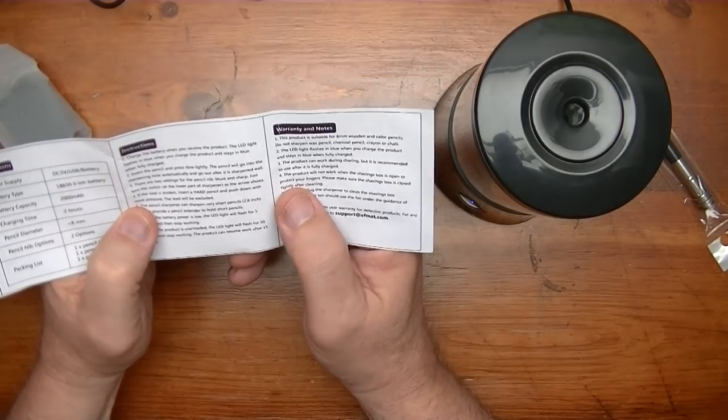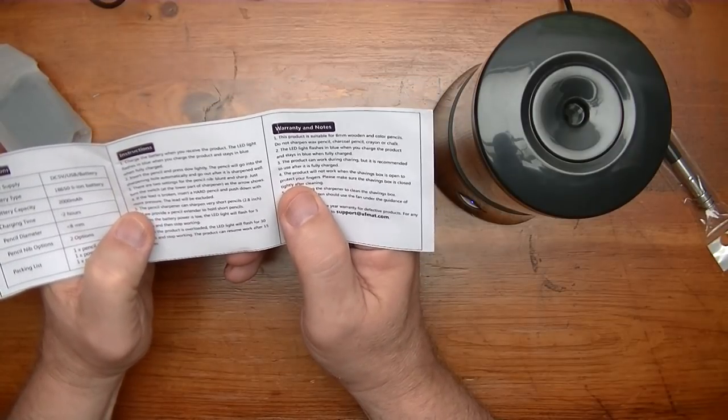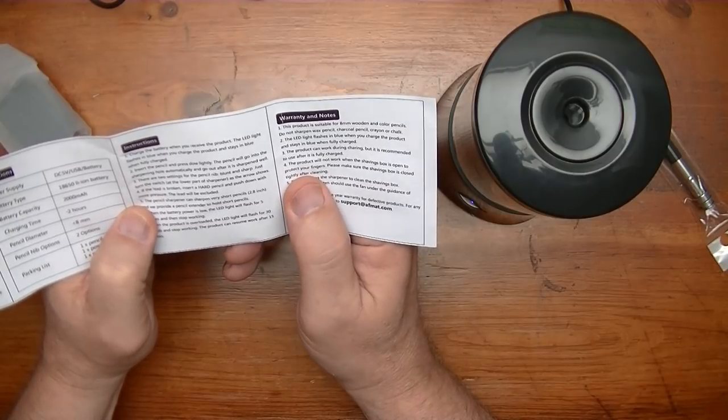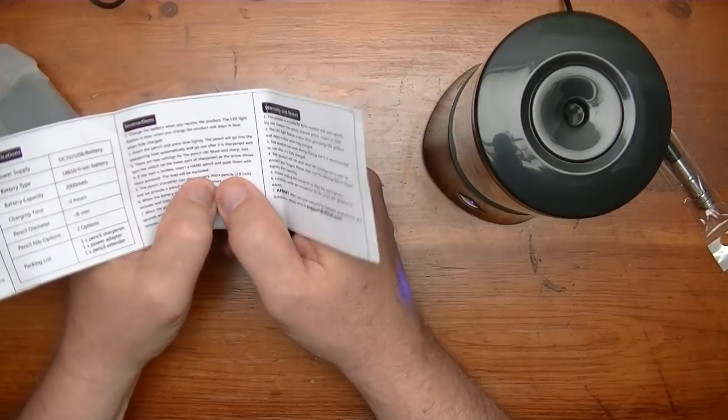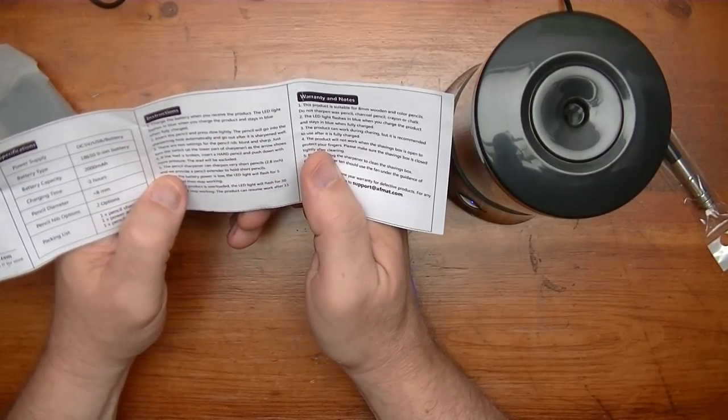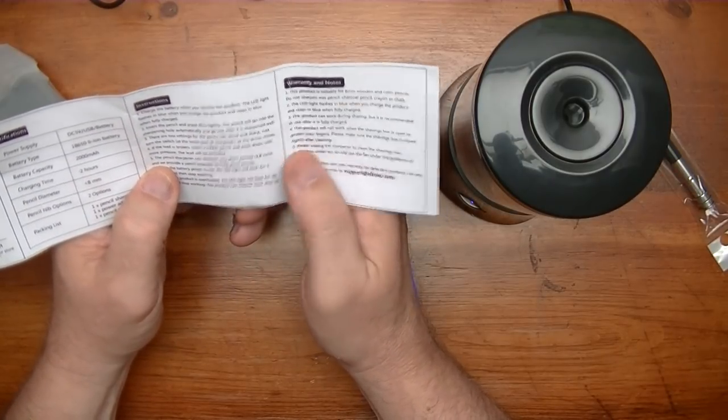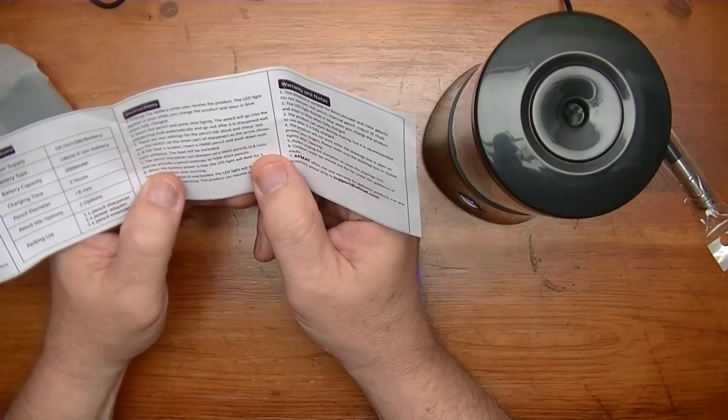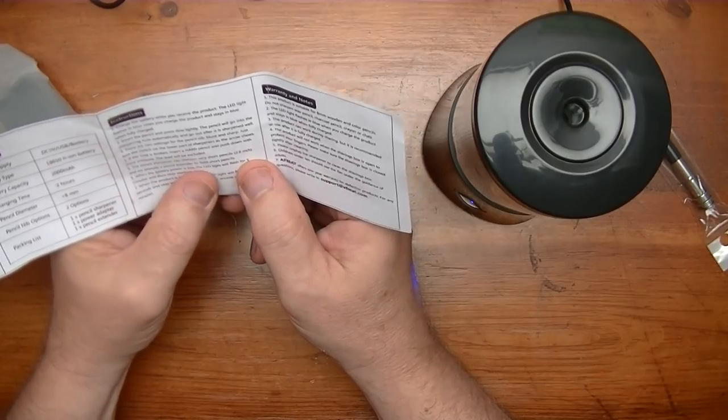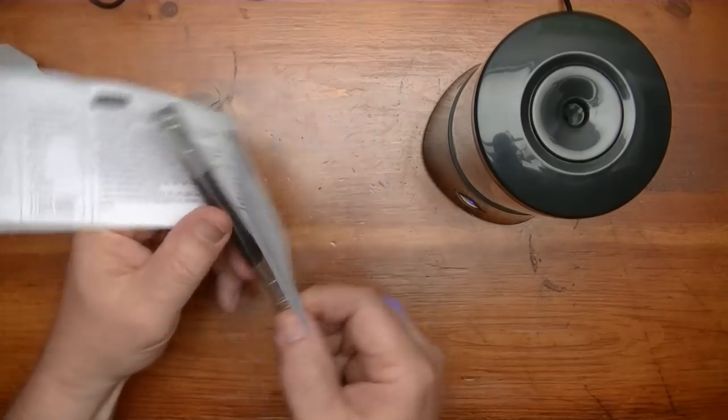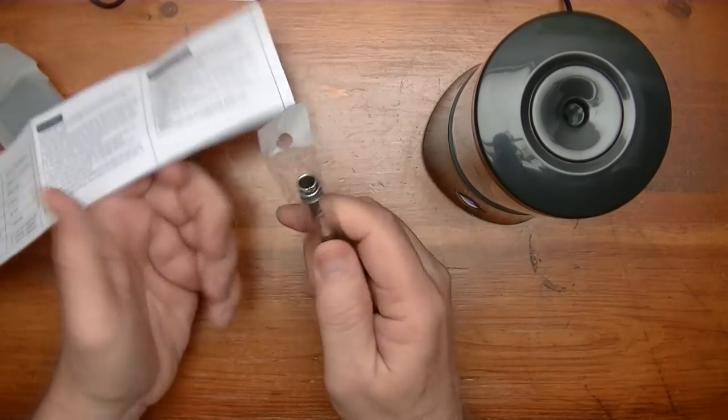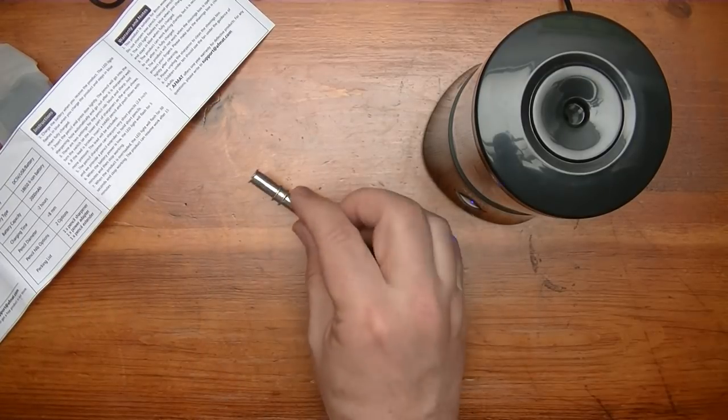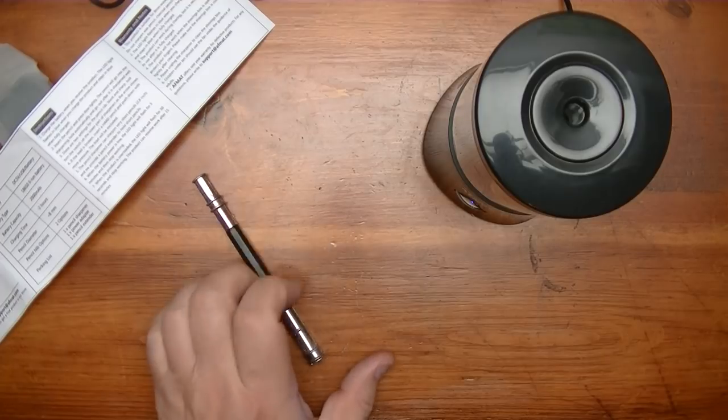It says if the lead is broken insert a hard pencil and push down with more pressure and the lead will be excluded. Excluded? Probably extruded. But anyway, the pencil sharpener can sharpen very short pencils that are only like 2.8 inches. And we provide a pencil extender to hold short pencils. That's what this puppy is. And you can never have enough of these if you are a pencil artist because our pencils do get short, short in the stubbies.